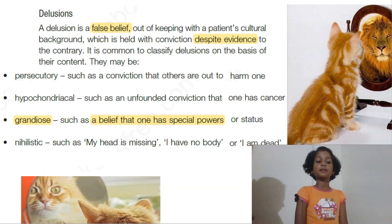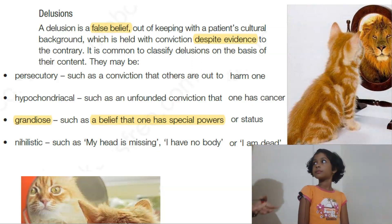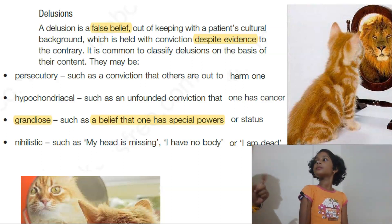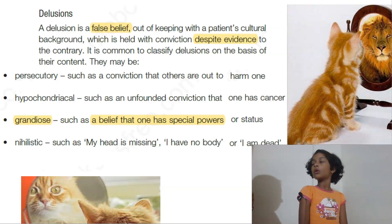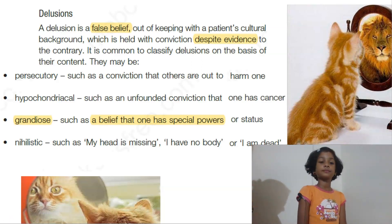Next one is hypochondriacal. That means he believes that he has cancer. Though you show him proof that you do not have cancer, he believes he has cancer. So this is called hypochondriacal delusion.